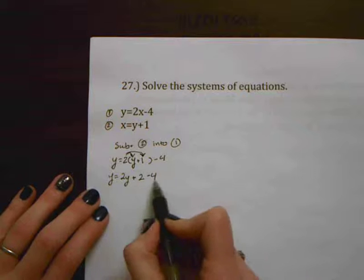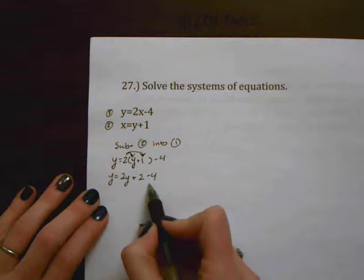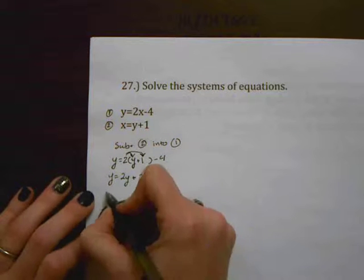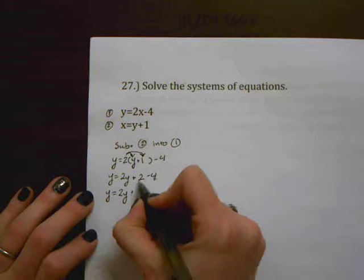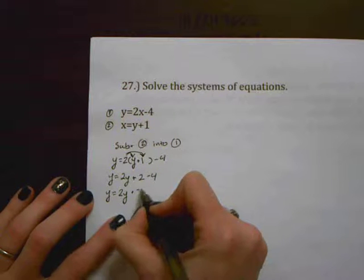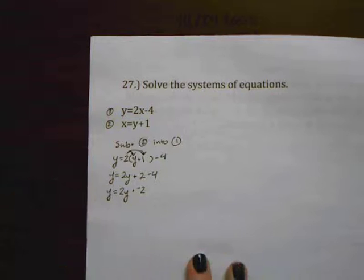And now I can start combining like terms. I've got this 2 and this minus 4 here that are like terms because neither one of them has a variable. So 2 minus 4 would be negative 2.